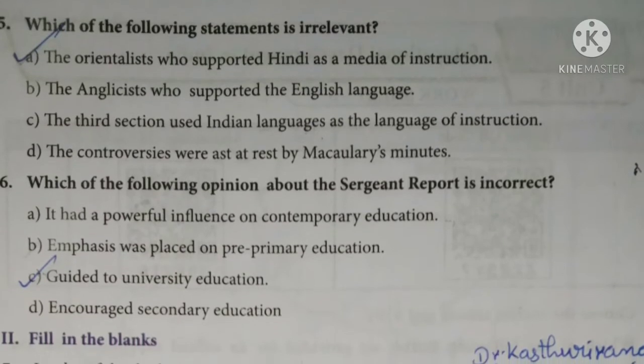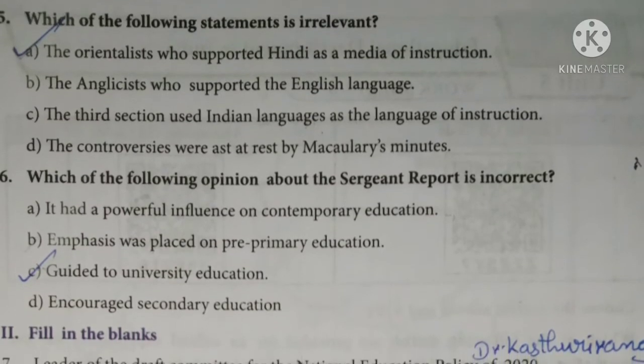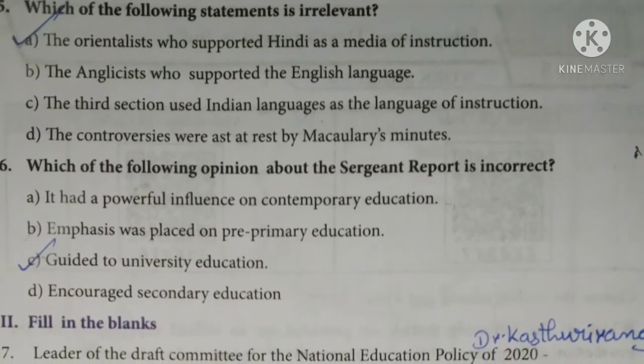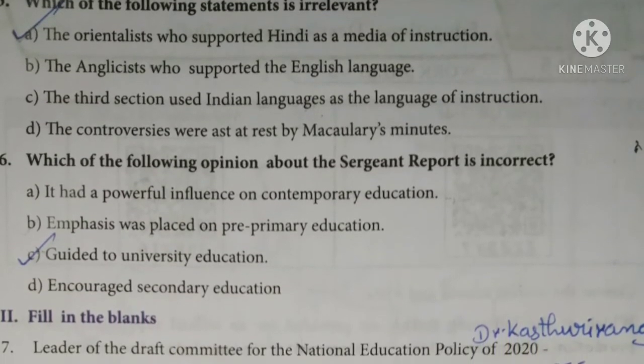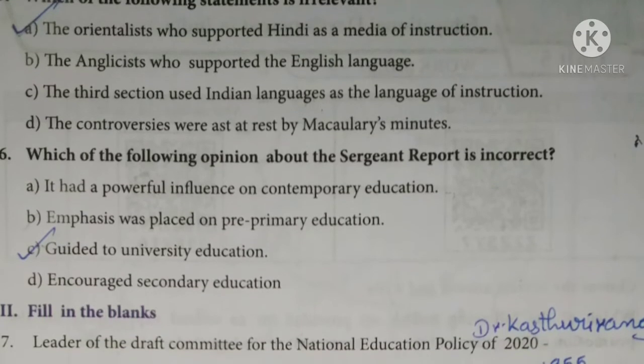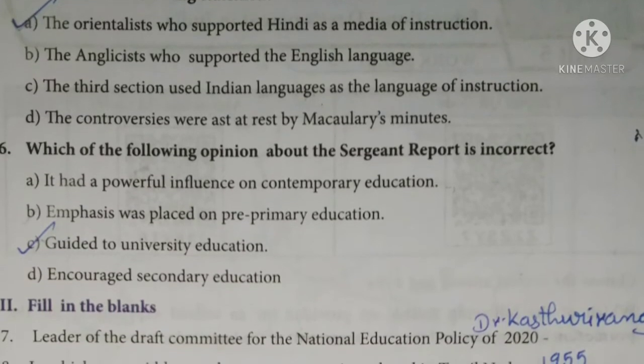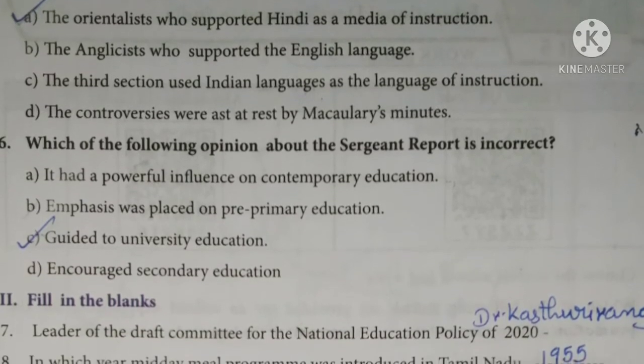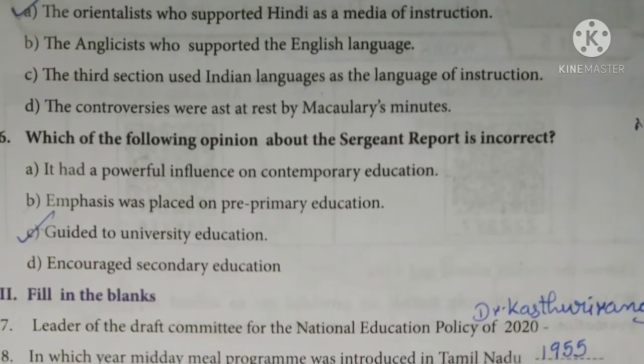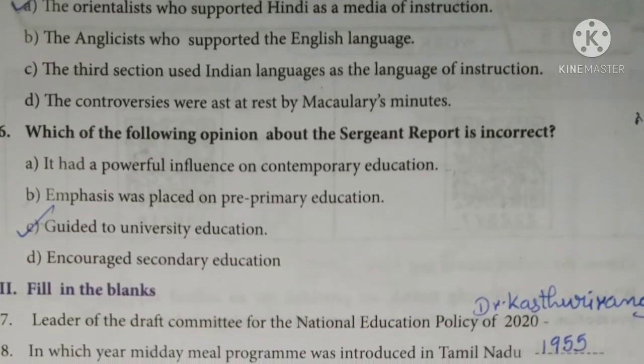Sixth question: Which of the following opinion about the Sargeant Report is incorrect? The answer is option C — guided to University Education.